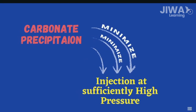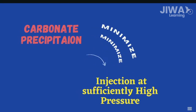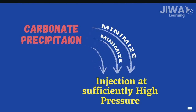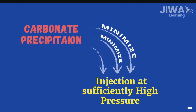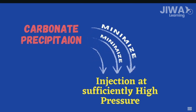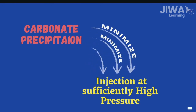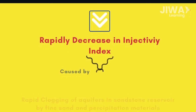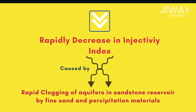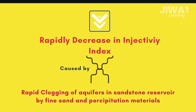Another type of scaling that might occur during injection is carbonate precipitation. This process is minimized by operating the injection at sufficiently high pressure. Injecting the fluid back into sandstone reservoirs can also lead to a challenge where the injectivity of the injection wells decreases very rapidly.